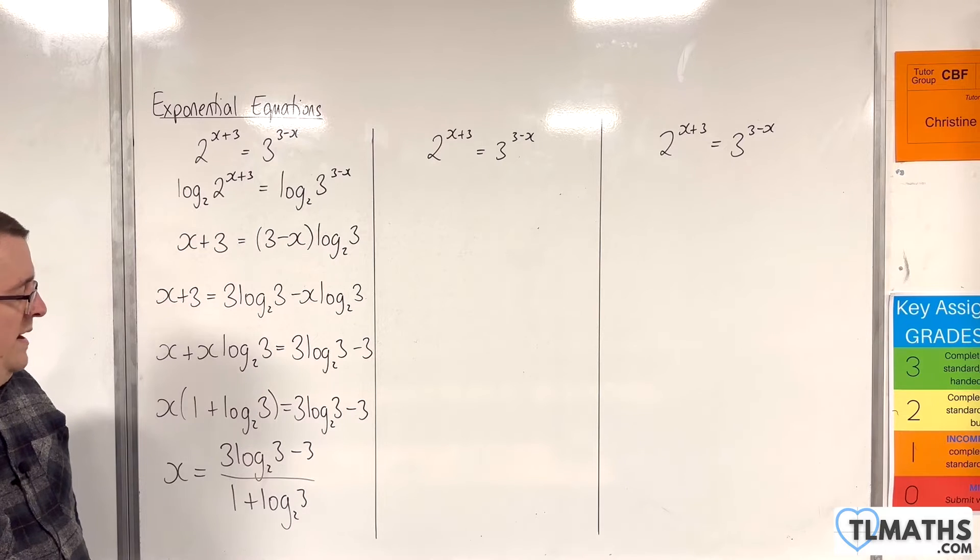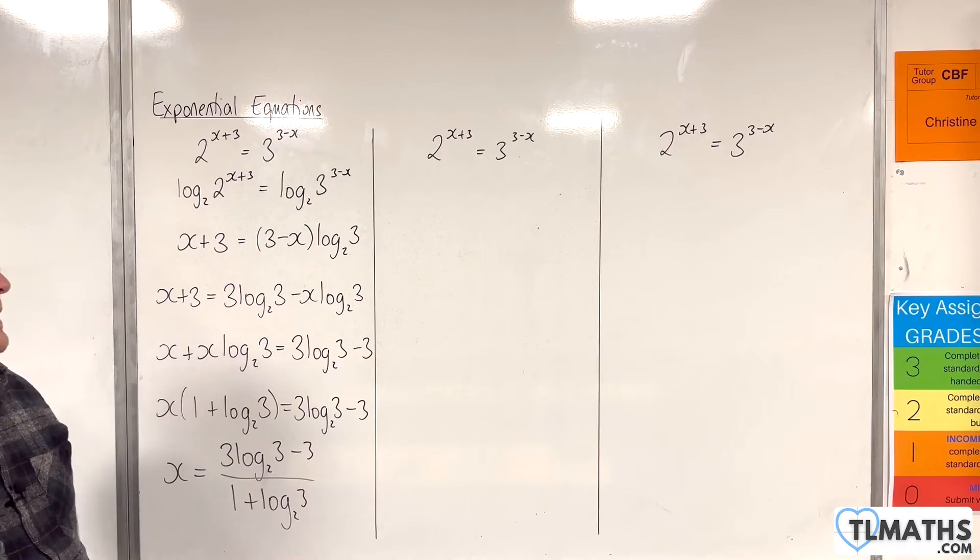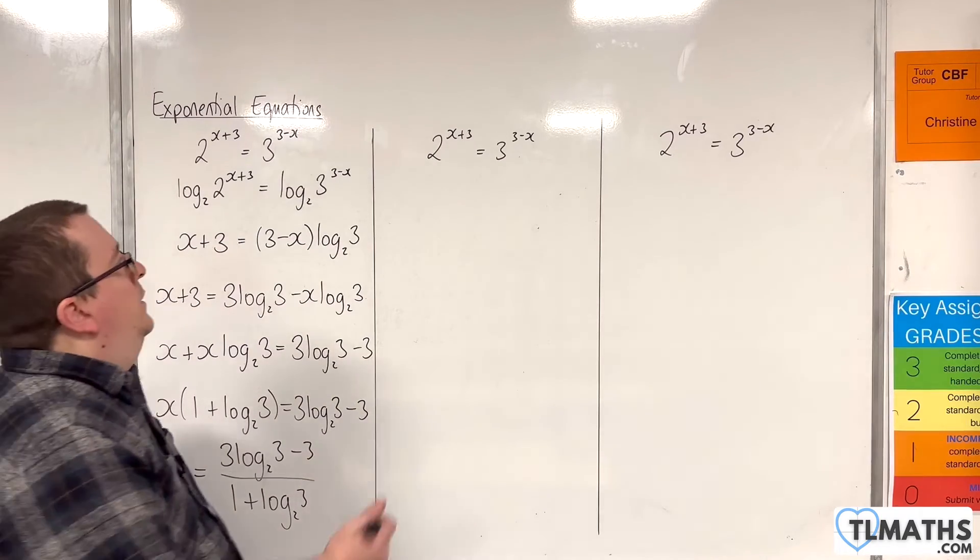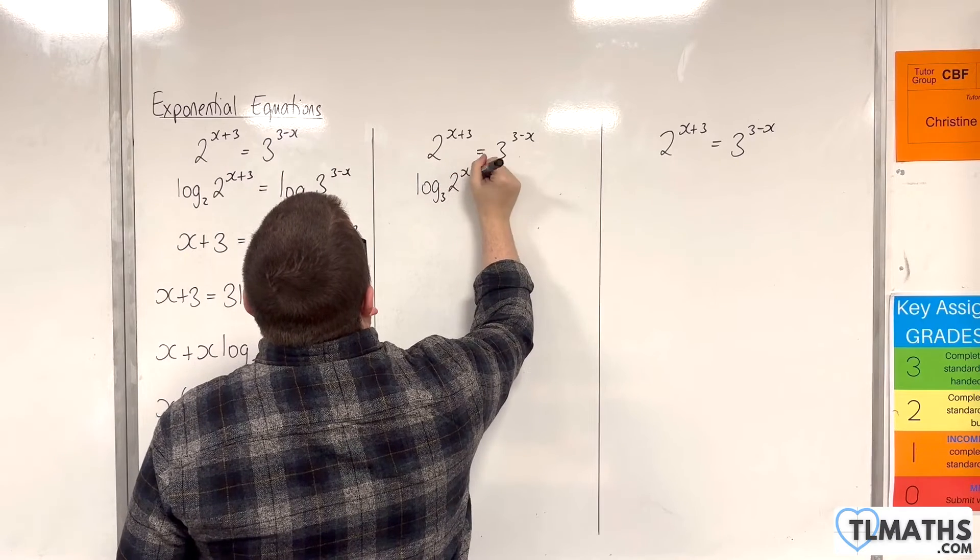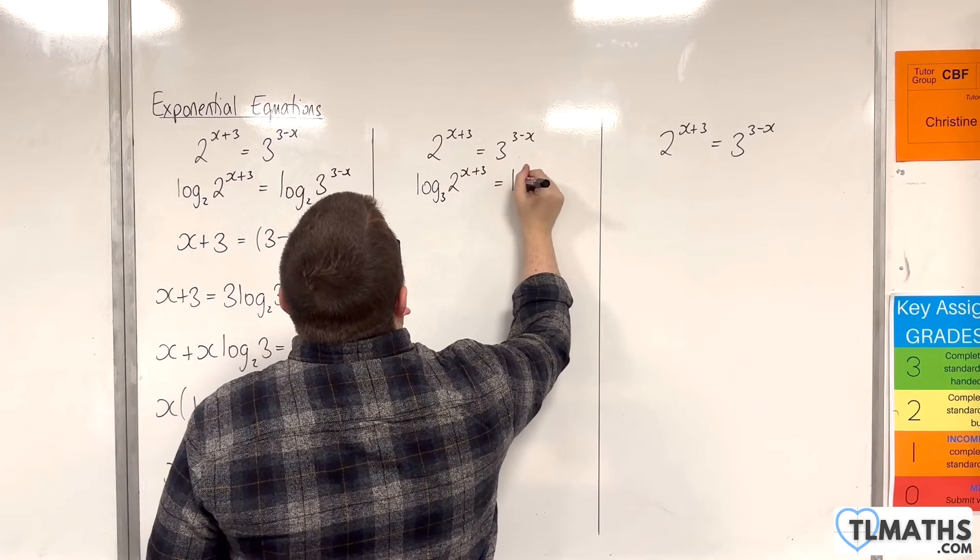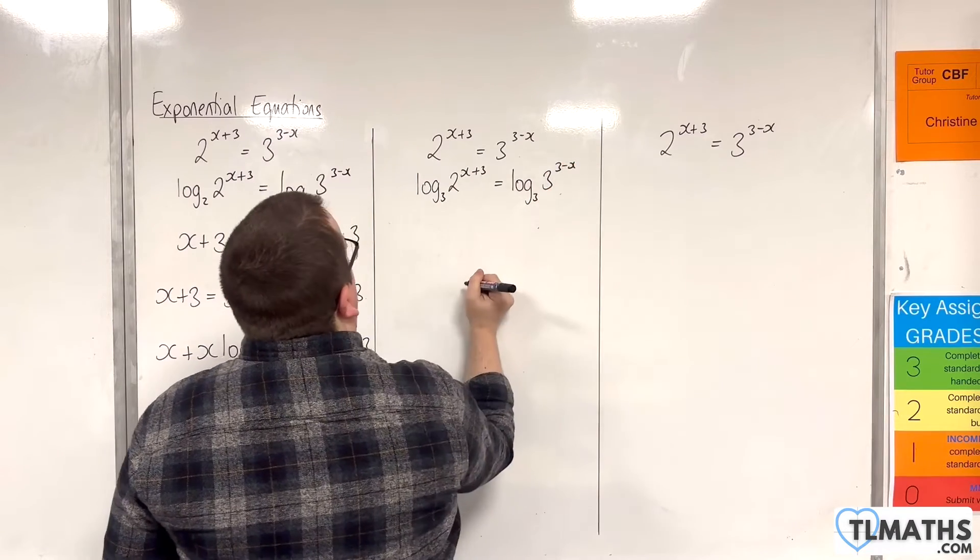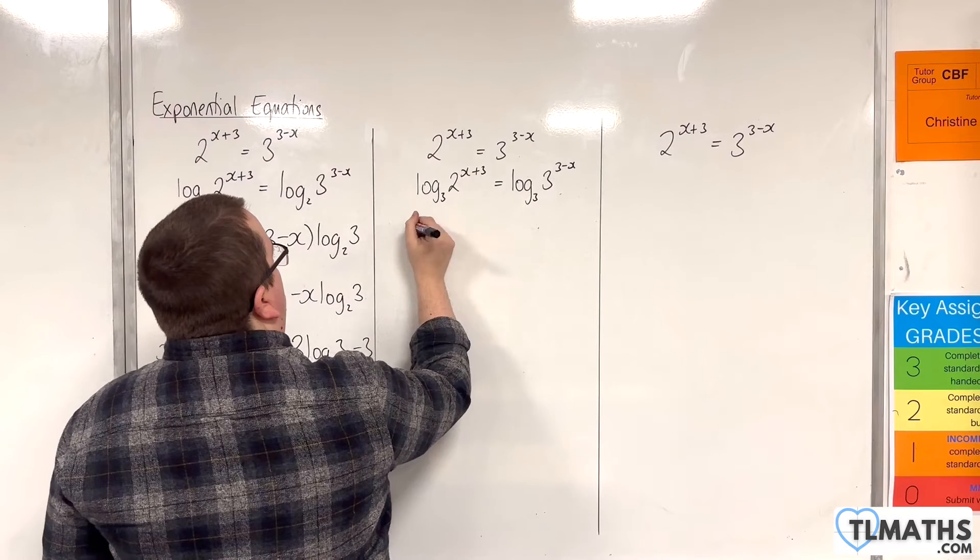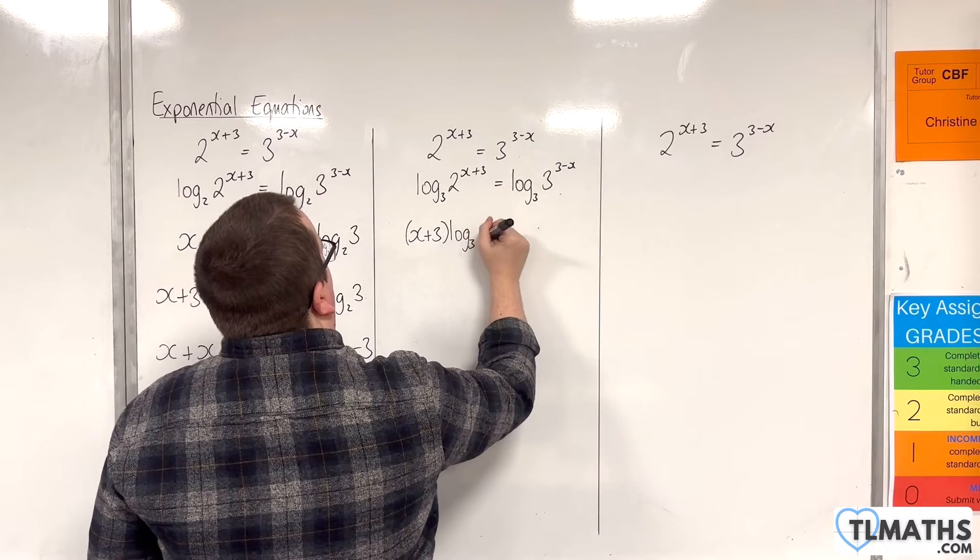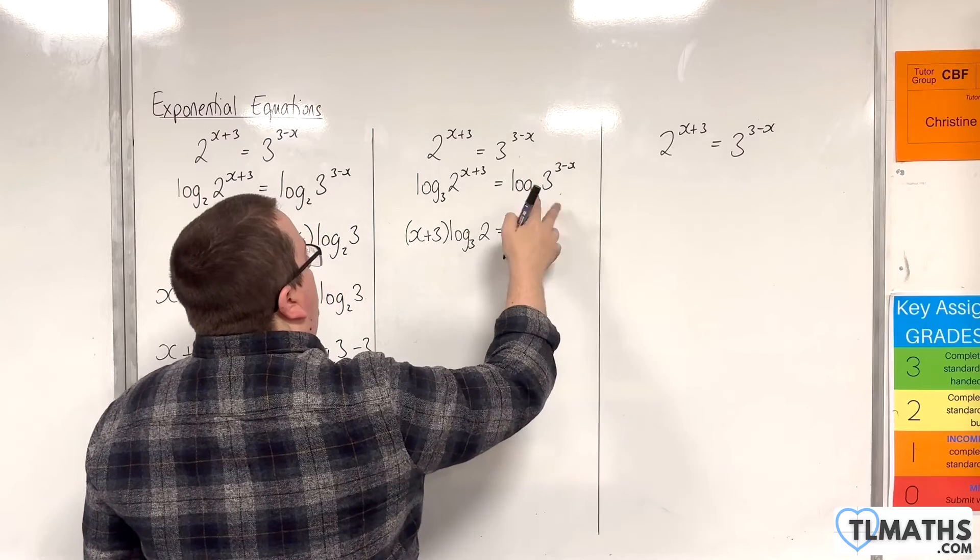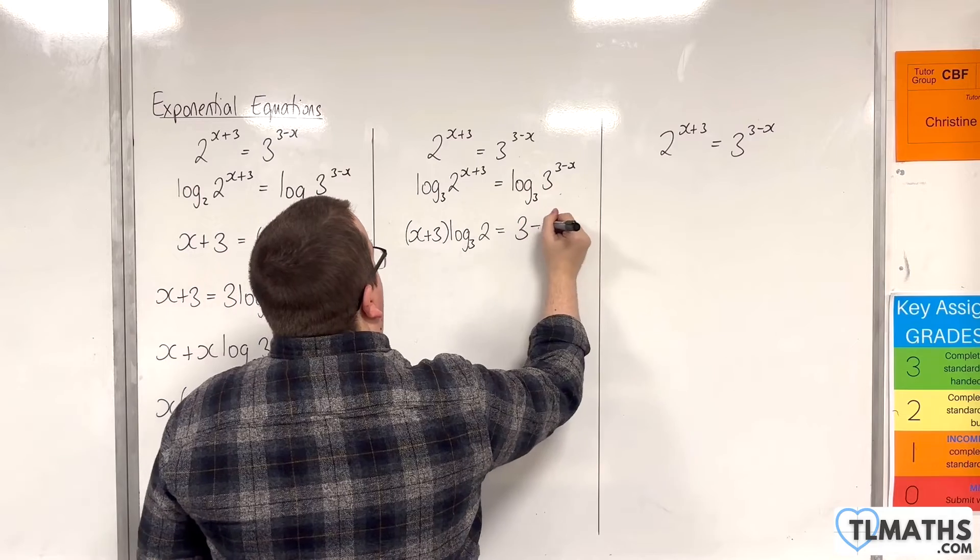So we're now going to use base 3 and we're going to see if we get anything similar or if it looks completely different. So base 3 then. Log base 3 of 2 to the x plus 3 is equal to log base 3 of 3 to the 3 minus x. Now the left hand side we can use the power rule, bring that x plus 3 down to the front. And on the right hand side we've got log base b of b to the power of 3 minus x, so that's just 3 minus x.